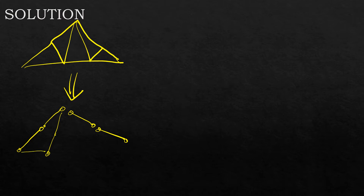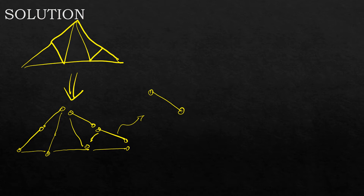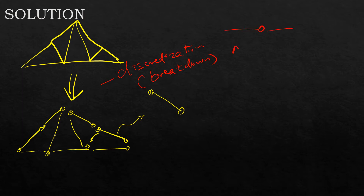There is a connection between different elements. If I take an individual element, there is this node and this node — you can see where the nodes typically occur naturally. By definition, once we do the discretization — the breakdown of a structure — we are left with some interconnected members, interconnected points. A node is a point of interconnection between elements.